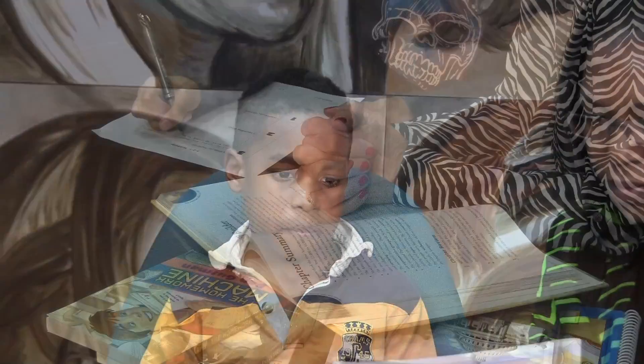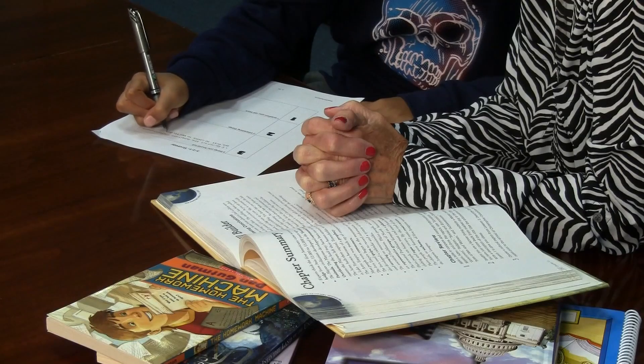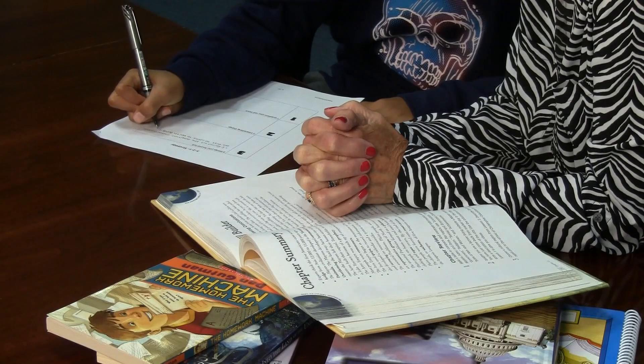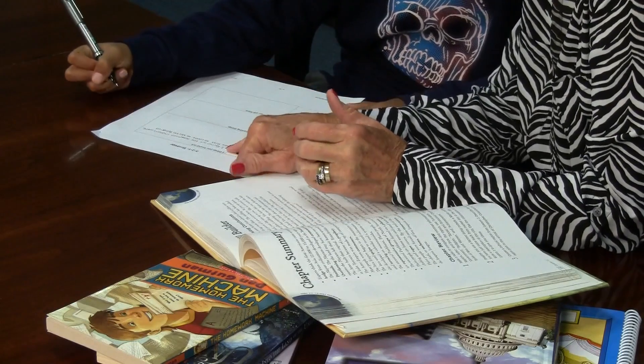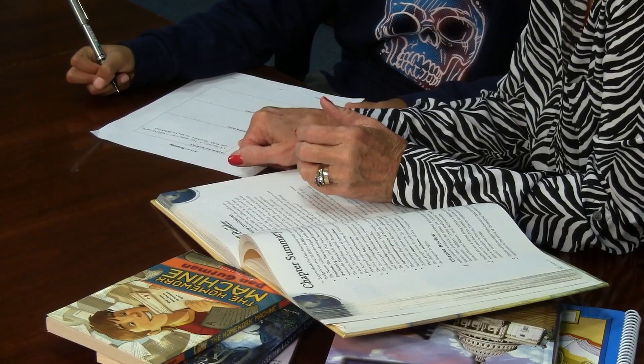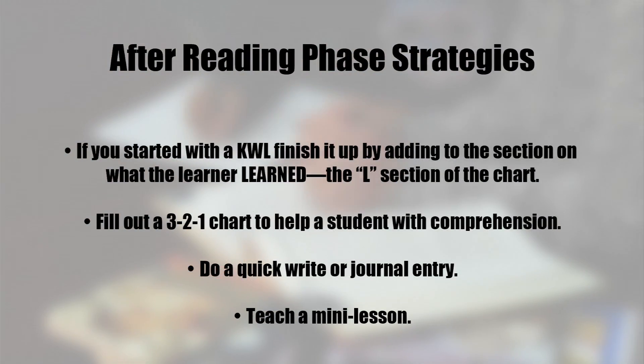Most importantly, let the learner read and try to get them to work out their problems, but don't allow them to get frustrated during reading. Reading is about meaning and comprehending. Capable readers think about what they've read and even organize that information. After reading, we want to help the learner take stock of what they've read. Here are some strategies you can use.